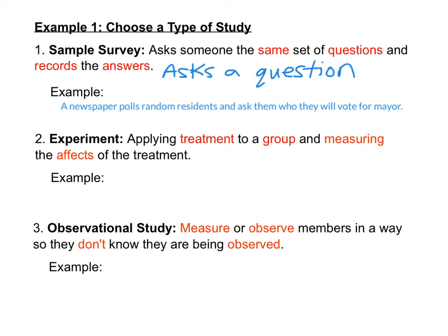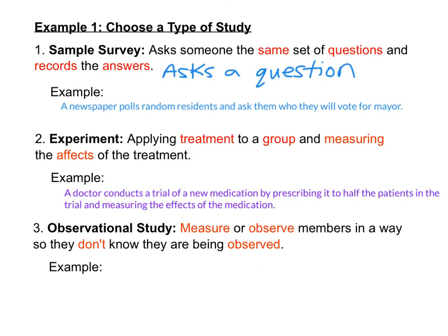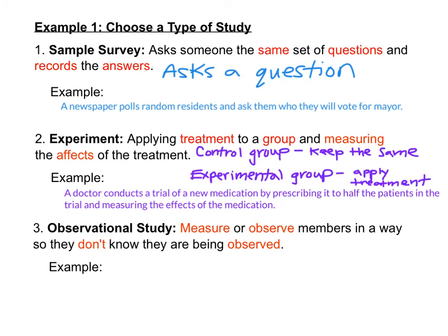The second type of study is called an experiment. In an experiment, we're applying a treatment to a group and measuring the effects of that treatment. An example would be a doctor conducting a trial of a new medication by prescribing it to half of the patients and measuring the effects. Whenever we do an experiment, participants are always divided into two groups: a control group and an experimental group. The control group stays the same, and the experimental group receives the treatment. In medical trials, participants do not actually know whether they're in the control group or the experimental group — some receive the actual medication, and some receive a placebo, which is fake medication.